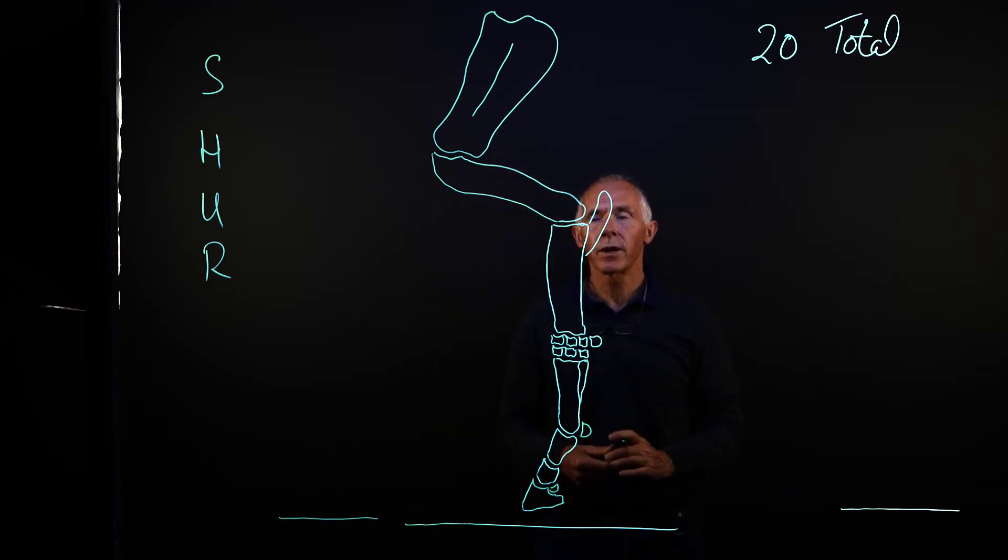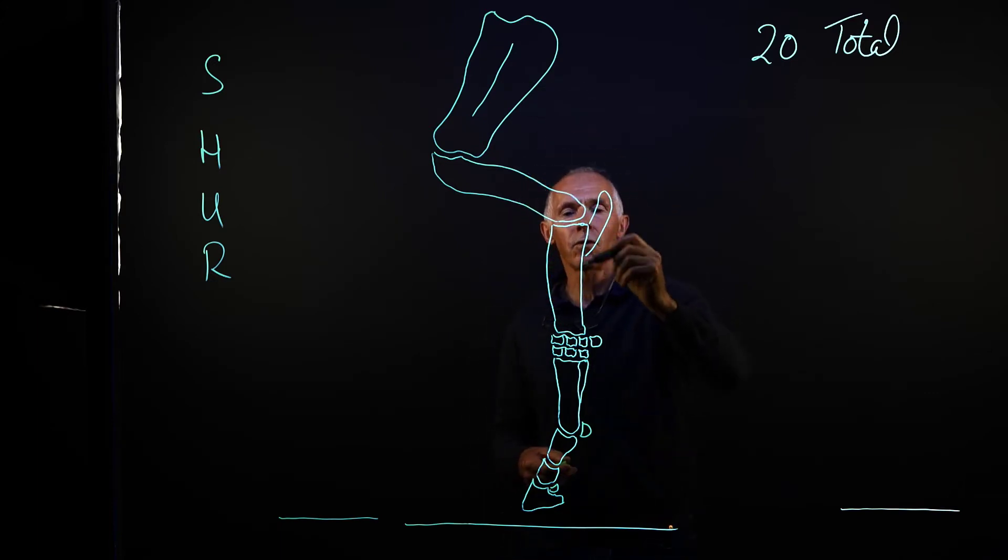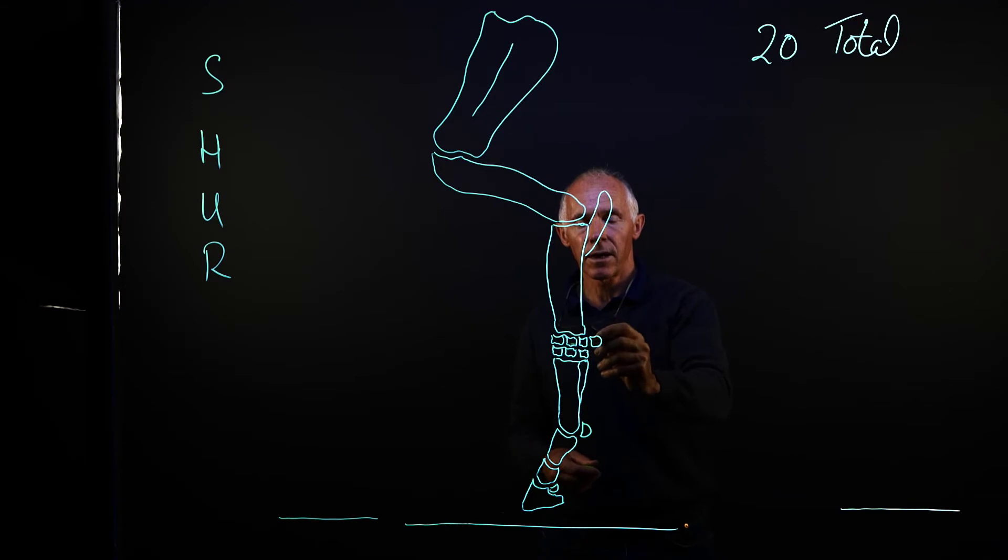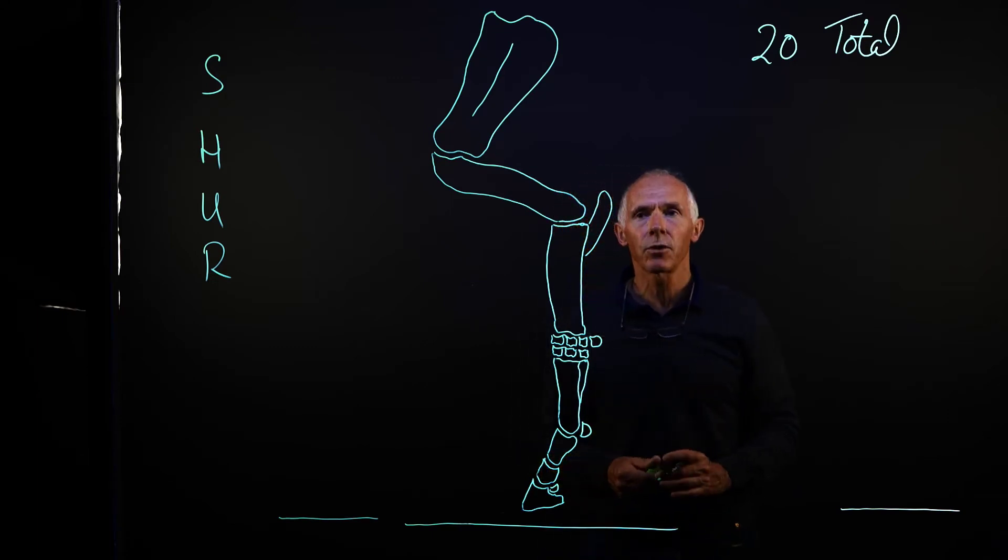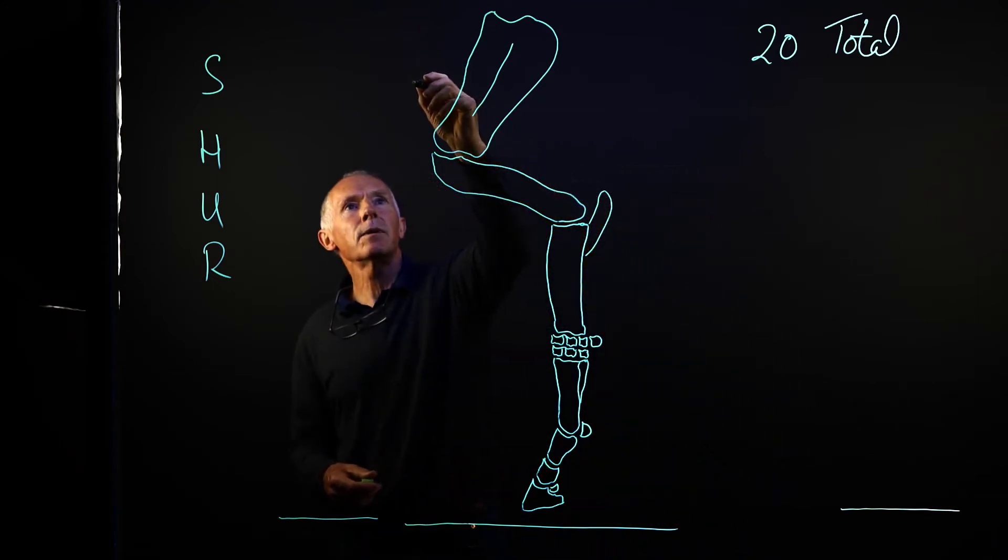So again we have 20 bones in total. We have four that make up the proximal region, seven that make up the two rows of small bones. Sometimes there will be an additional bone in the carpal joint. Then we have three metacarpals, two sesamoids, three phalanges, and then one distal sesamoid or navicular bone. So we'll begin by naming them.